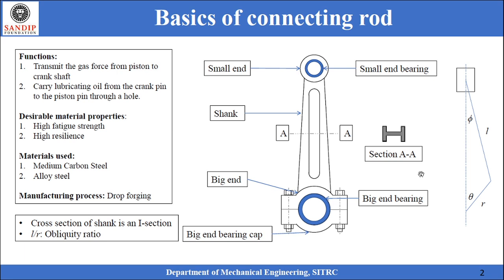Another geometrical property to discuss is the ratio of L to R, called the obligatory ratio, which is the ratio of connecting rod length L to the crank radius R. The angle made by the connecting rod with the axis of the cylinder is denoted by phi, whereas the angle made by the crank with the axis of the cylinder is denoted by theta. The axis of the cylinder is also called the line of action of the piston.